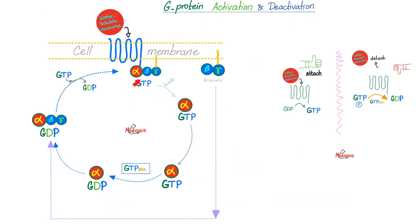When this receptor is bound to GTP, it is active, and this happens when the water-soluble hormones attach to the receptor. But what if the water-soluble hormone detaches? Then it's time to deactivate - GTP will become GDP. And when the hormone comes back, we activate again in a beautiful cycle. With GTP, we are active, and the alpha subunit is going to separate from the beta and gamma subunits. They are anchored to the cell membrane by the gamma subunit. GTP with alpha subunit means active. To deactivate: GTP becomes GDP, and alpha, beta, and gamma recombine into the inactive state bound to GDP. When the hormone binds its receptor again, GTP replaces GDP and the cycle activates.